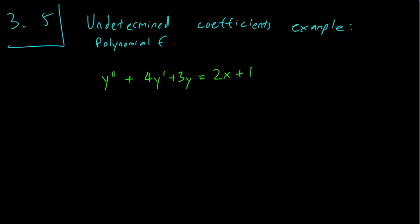Hello class! We are going to try a few examples of the undetermined coefficients technique. So first, let's try one with a polynomial. We have y double prime — a non-homogeneous equation with f equals 2x plus 1, which is a linear polynomial.